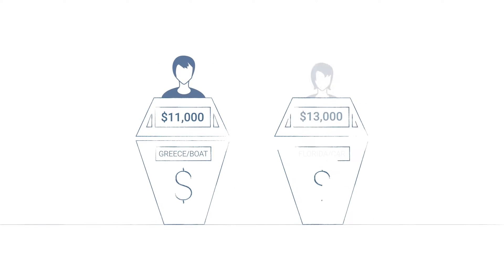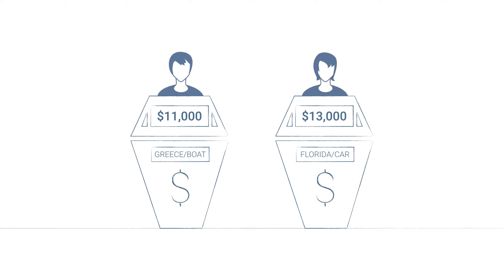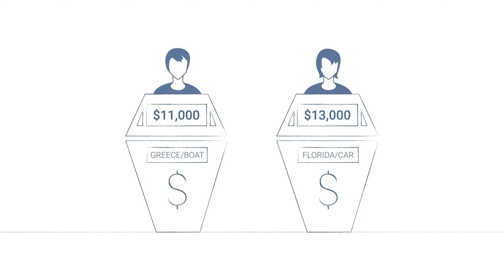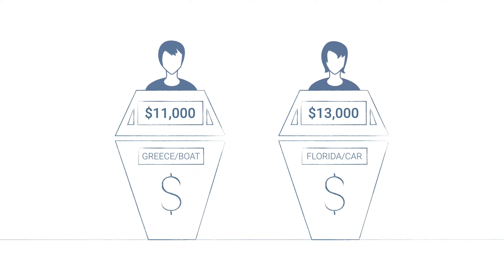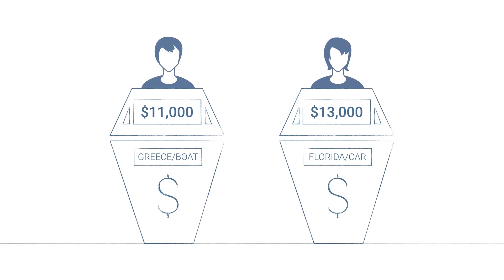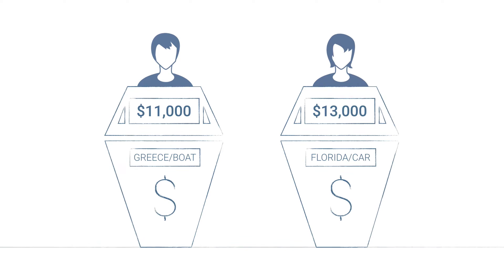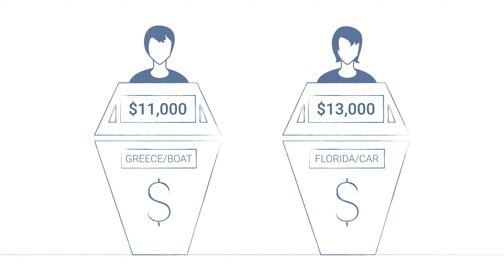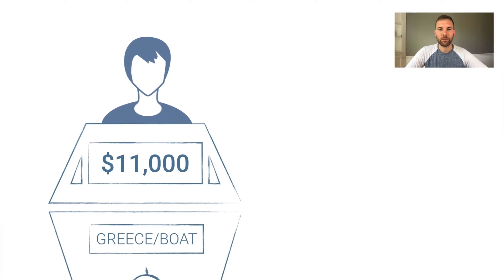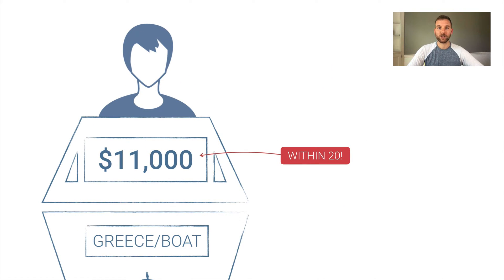In the Price is Right, at the end of every episode they have a showcase showdown where contestants are shown a showcase of prizes—usually a trip, car, or boat—and they have to try to guess what the value of all those prizes are. The person closest to the right value without going over wins all the prizes.